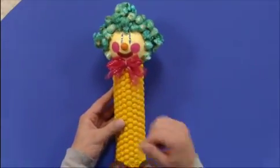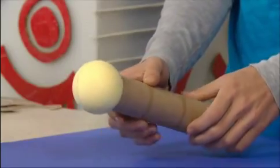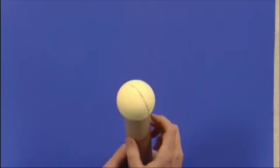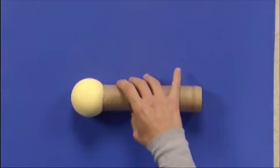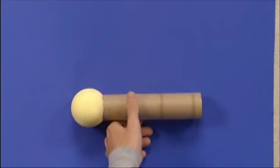To Artzuka a popcorn clown, I started by gluing an empty paper towel roll to a styrofoam ball that I painted yellow with a mixture of white glue and yellow paint.